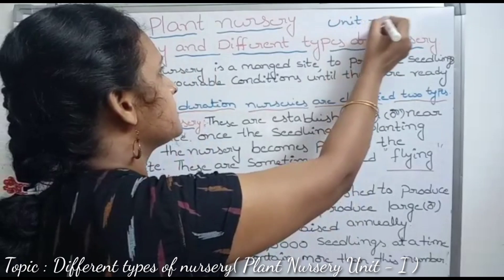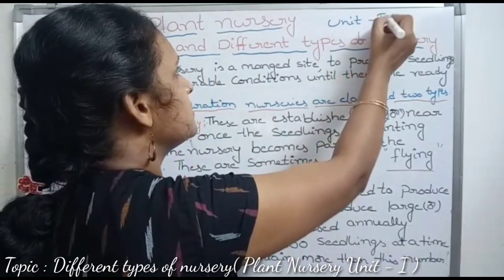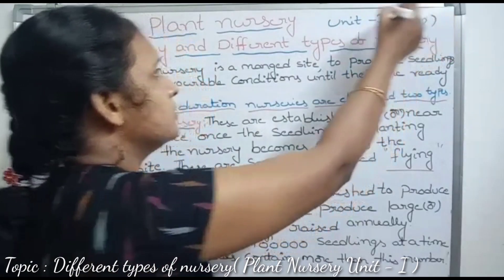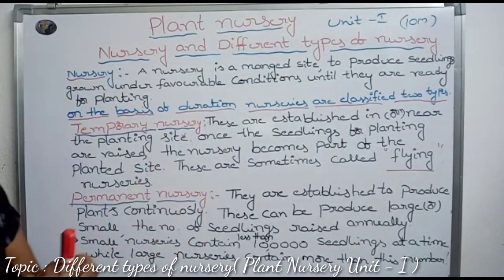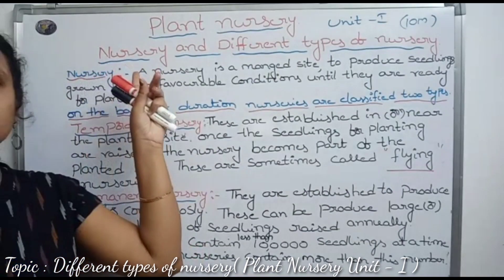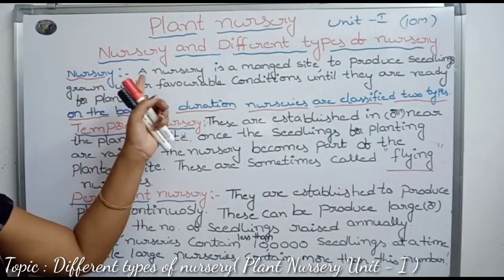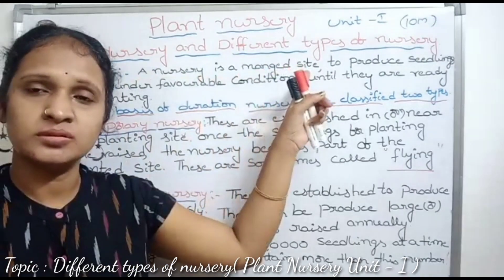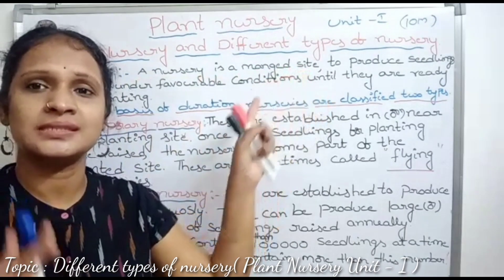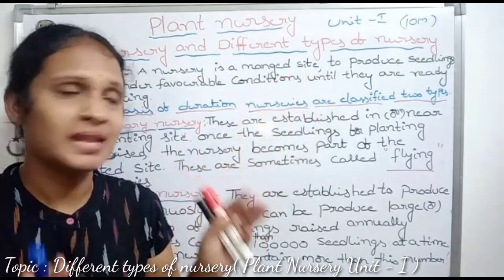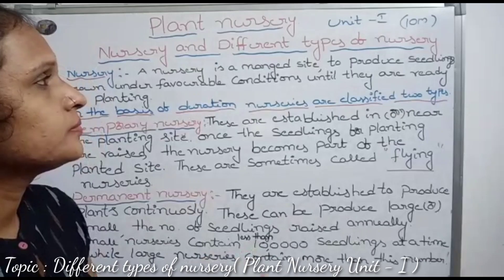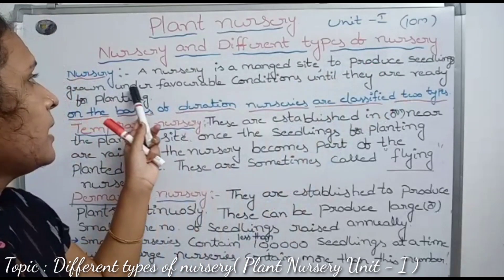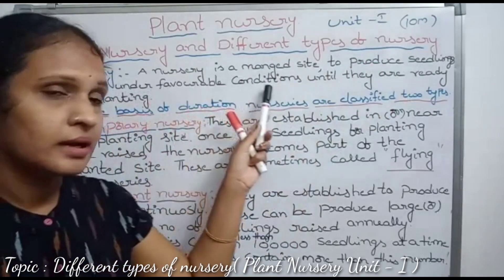Different types of nurseries is an essay question and a 10 marks question. First, see the definition of nursery. A nursery is a managed site — nursery means site. It is a place to produce seedlings grown under favorable conditions.